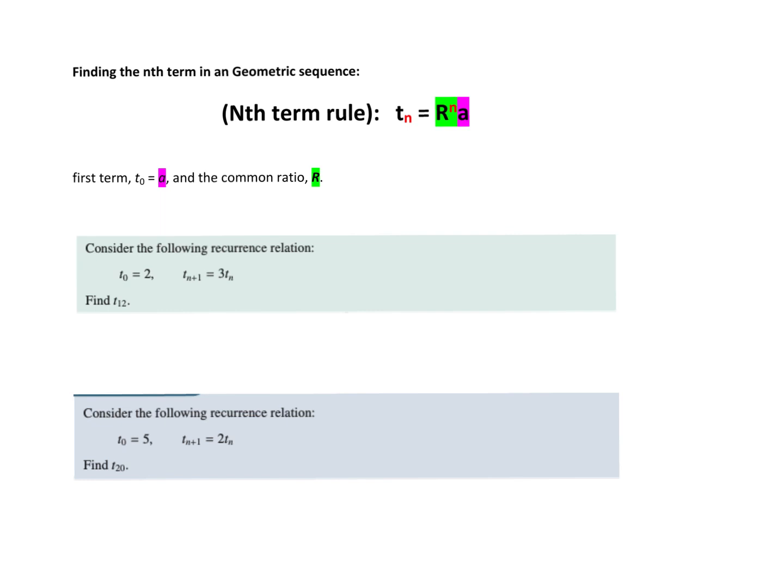But say we want to know what term 100 is. We don't want to keep clicking, clicking, clicking. That's when we have an nth term formula. We now have a formula for a geometric sequence for the nth term. Use this when you're trying to find any term at any time. Maybe just put in brackets, say e.g., if you were trying to find T100 or something. We don't want to keep on clicking.